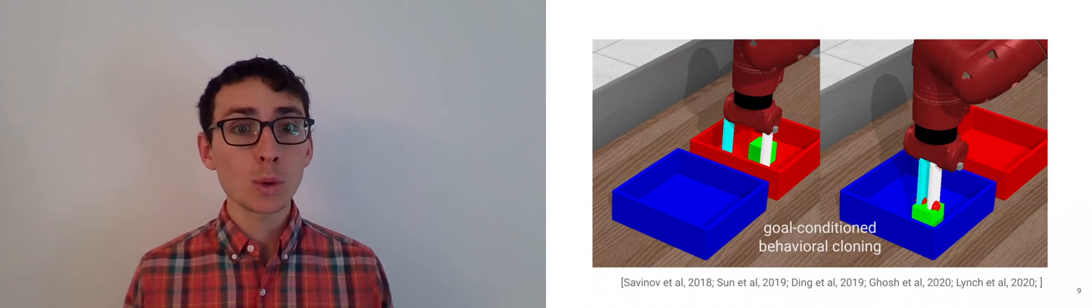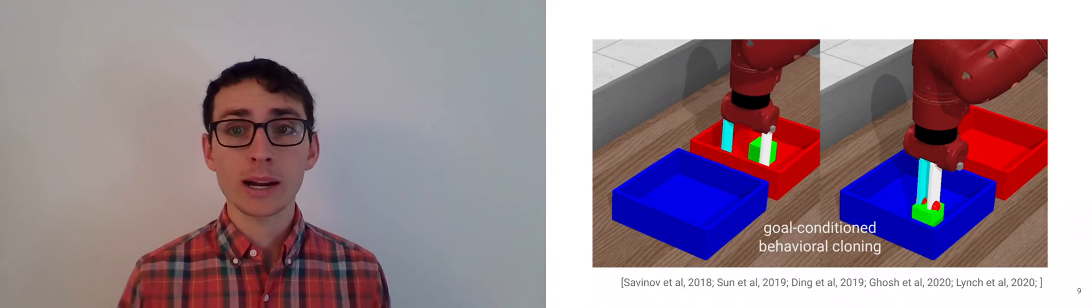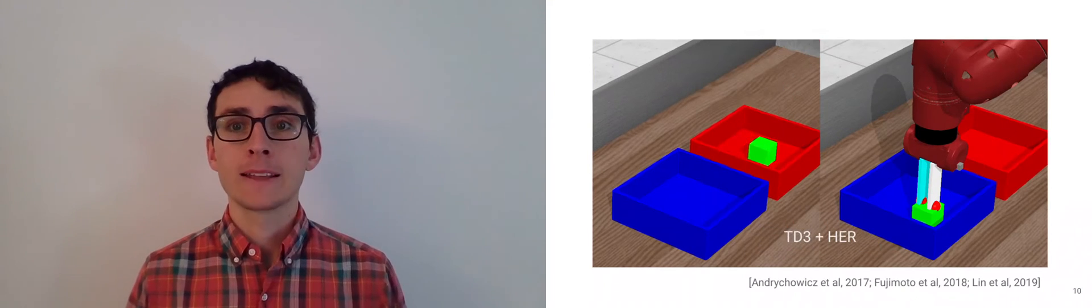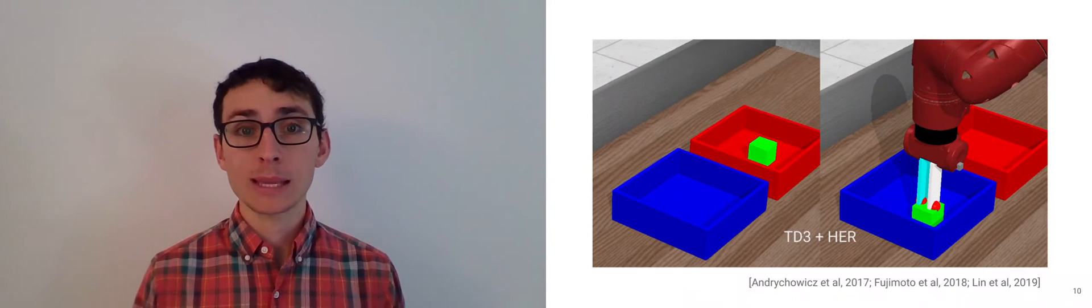Our first baseline is goal conditioned behavioral cloning, which is a pretty simple baseline that works really well according to prior work. The second one is TD3 plus HER, which is a temporal difference method combined with hindsight relabeling.